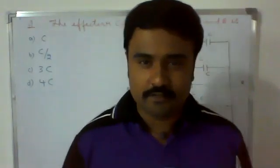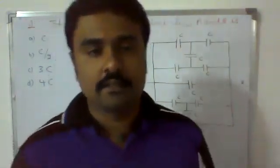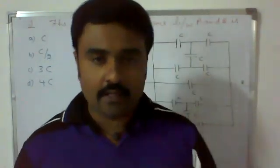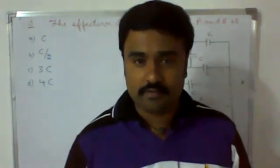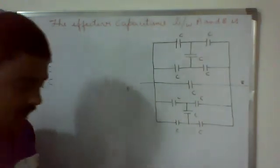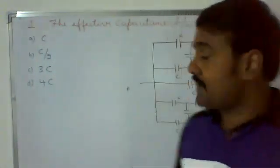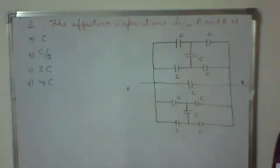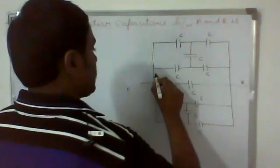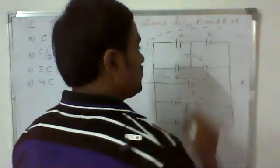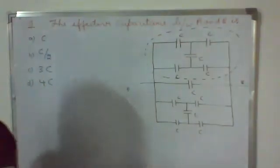Hi everyone, I would like to welcome all of you to today's class. In this class I am going to discuss how to simplify complex circuits. Here we have to calculate the effective capacitance between the points A and B. Look at this circuit — this part is just looking like a Wheatstone network.